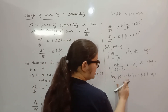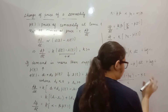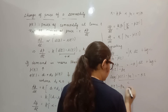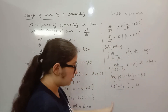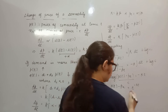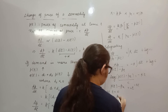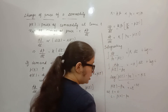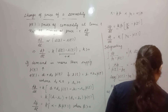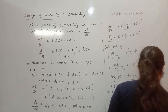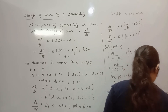So Pt minus Pe divided by C equals e to the power minus Kt. Taking C to the other side, this gives us the final equation: P(t) minus Pe equals (P0 minus Pe) times e to the power minus Kt. This is your final equation.